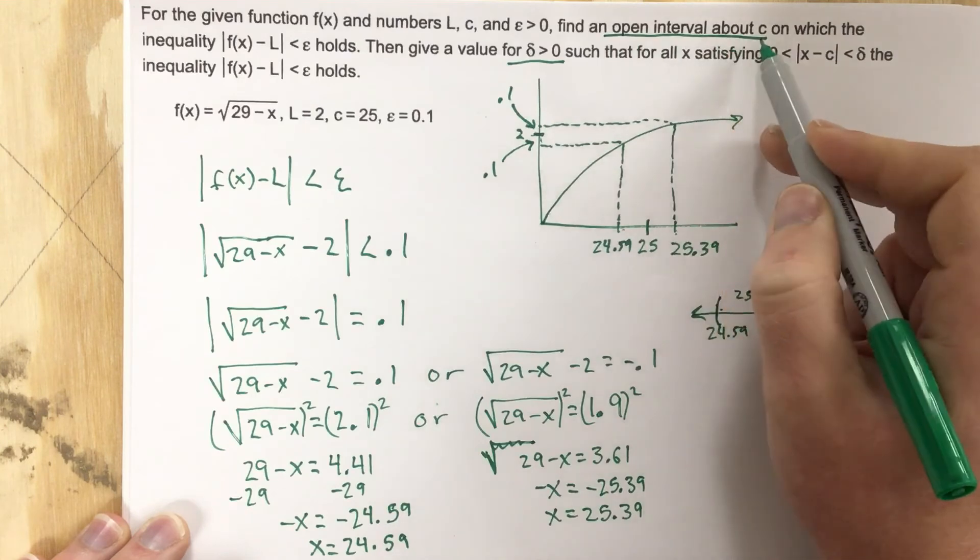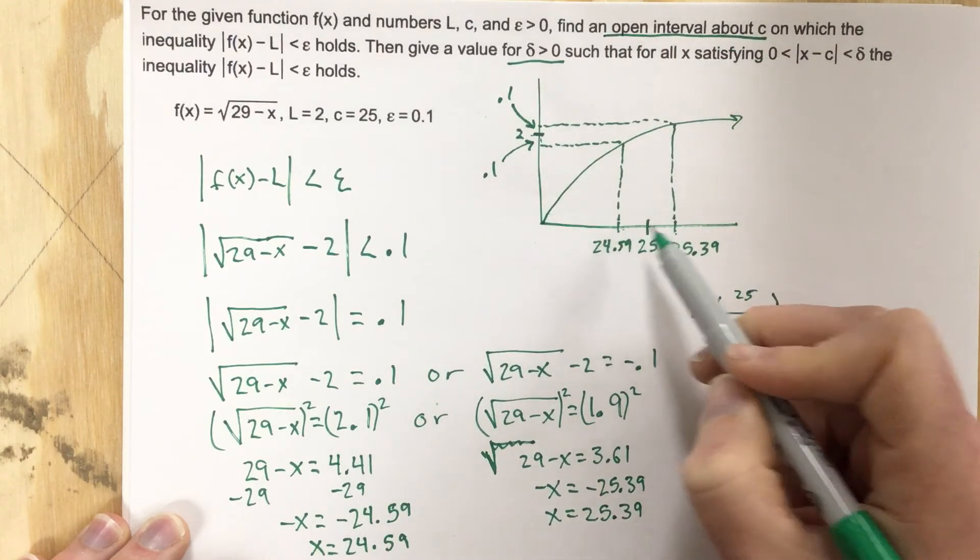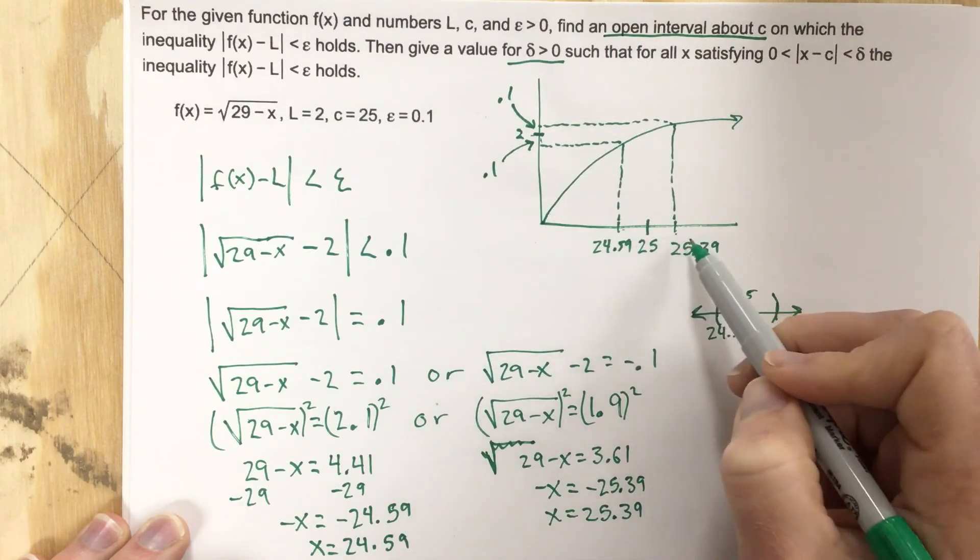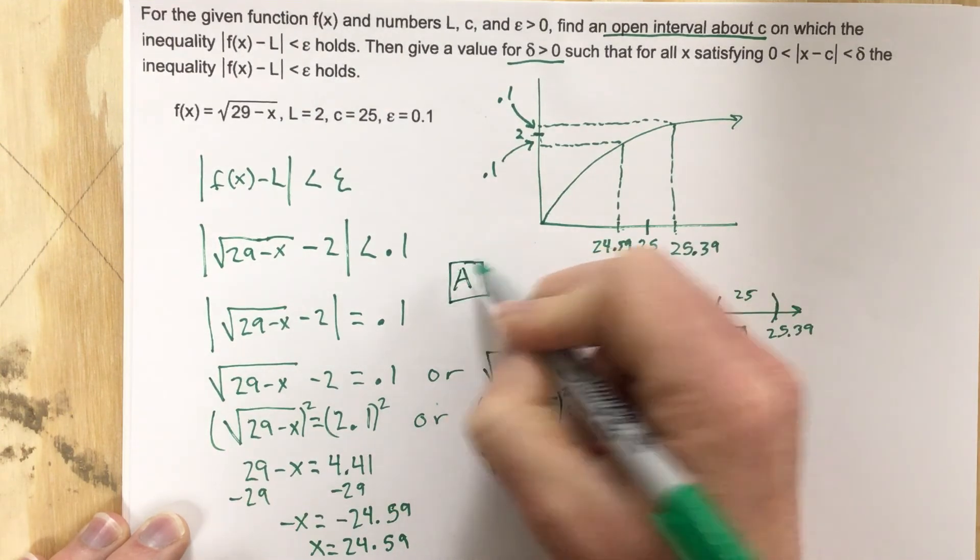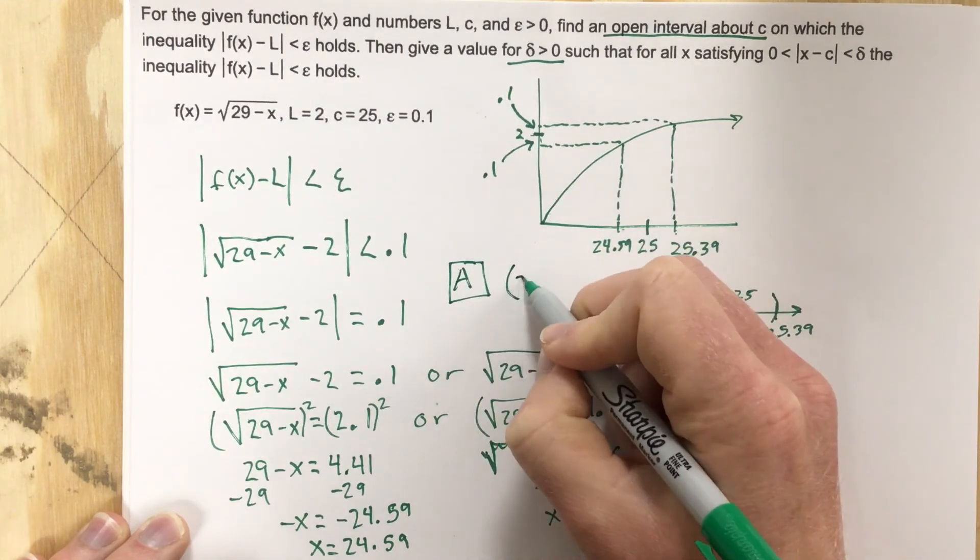So find an open interval about c, our open interval goes from 24.59 to 25.39. So for part A, this is our interval.